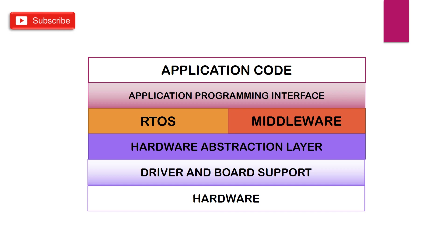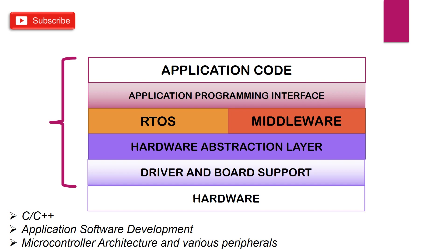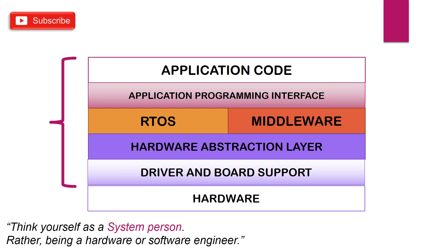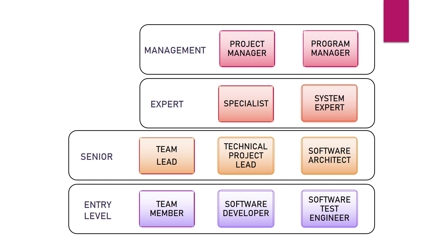In general, an Embedded Engineer writes software that controls some hardware. It can be any code ranging from the lowermost hardware abstraction layer or device driver layer to application programming. So depending on the industry and the specific job role, you will be working at any of these layers. To take up a career as an Embedded Software Developer, you can start from the application layer with good programming knowledge of C or C++ and some exposure to application software development, and also basic understanding of microcontroller architecture and various peripherals. But as your experience grows, you should increase your knowledge and come up as a system person rather than being a hardware or software engineer.